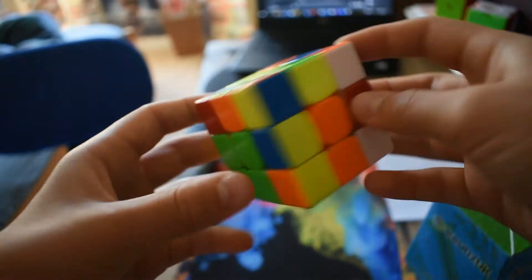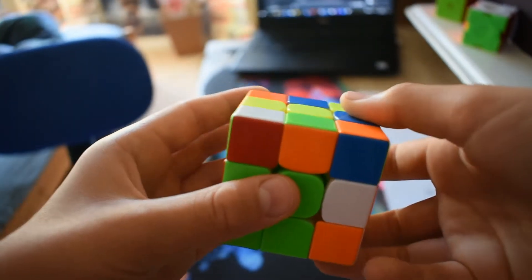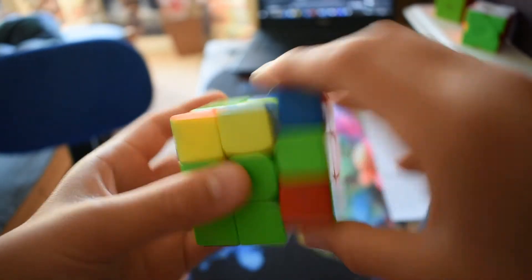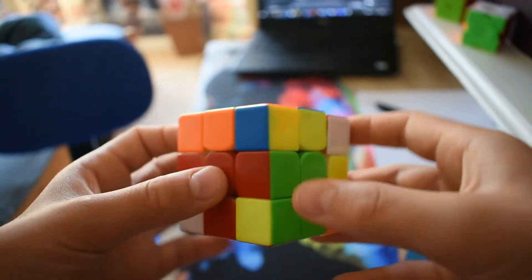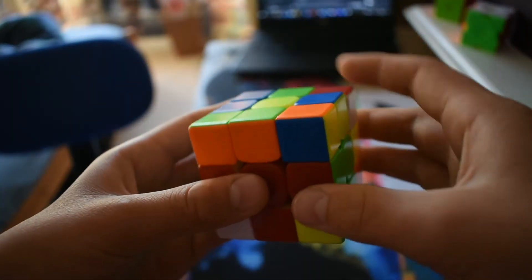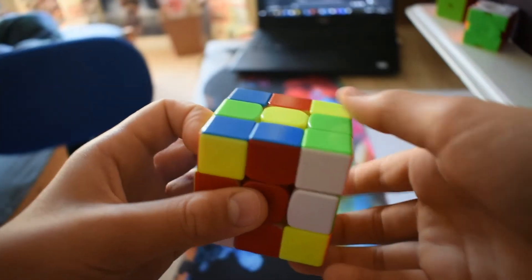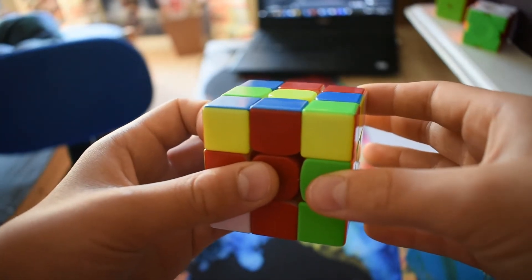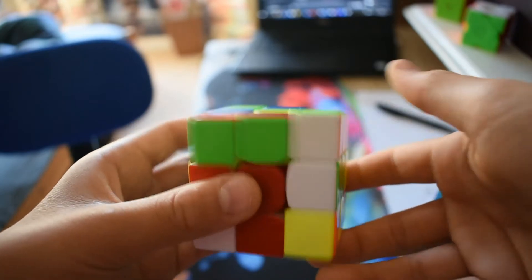Next, I solved this F2L pair with R U2 R2 U' R, a cancellation. And then I solved this pair with R U' R' U2 insert,